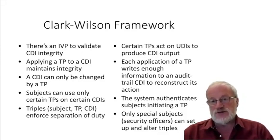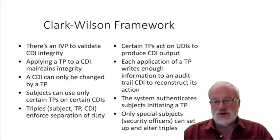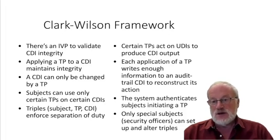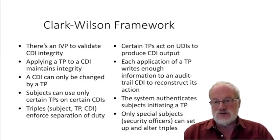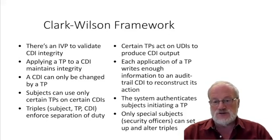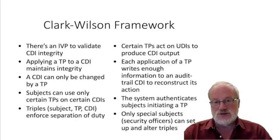The framework also includes auditing: each application of a transformation procedure writes enough information to an audit trail CDI to reconstruct its action. In a typical bank the system is designed so you can reconstruct the state at any day in the past three or four months, and logs allow reconstruction up to seven years back. Seven years is the period during which the bank can conceivably be sued by customers or counterparties. Authentication is also required: the system authenticates subjects initiating a transformation procedure, and only special subjects — security officers — can set up and modify the triples.